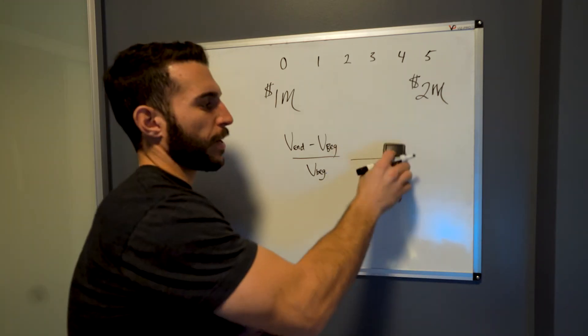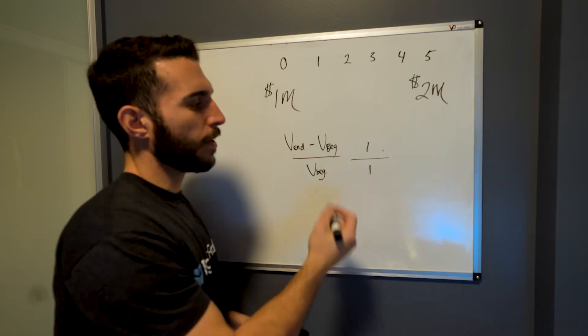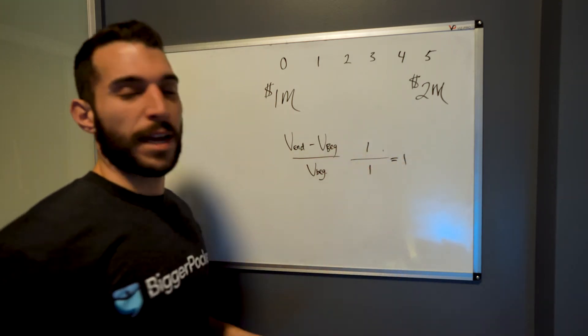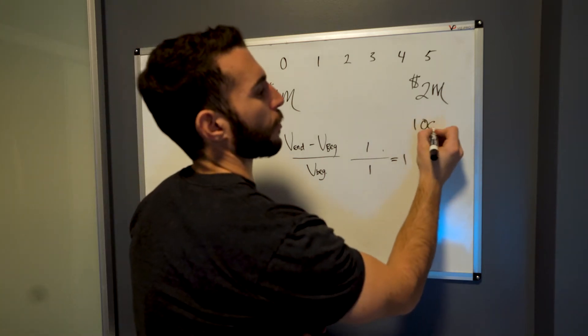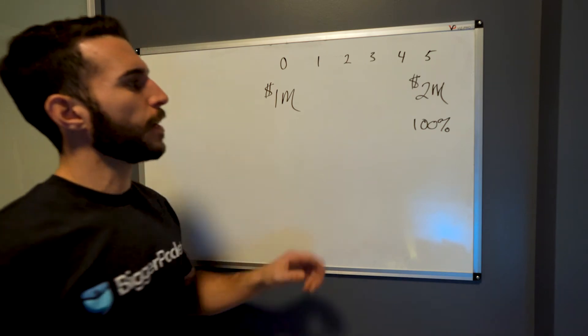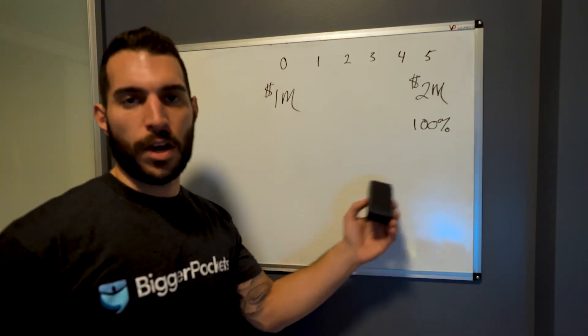Simple enough. Pretty obvious that becomes one, one over one is one, one times a hundred to make it a percentage is a hundred percent. So we know that the return on investment for this asset is a hundred percent.